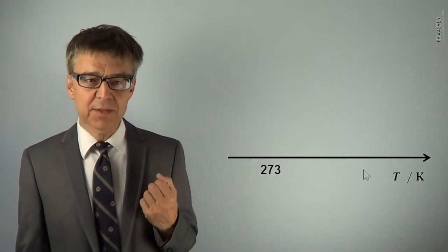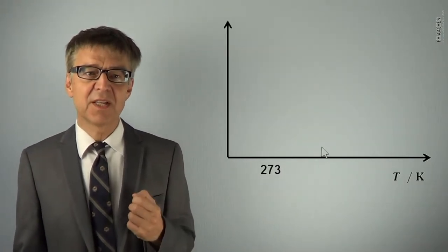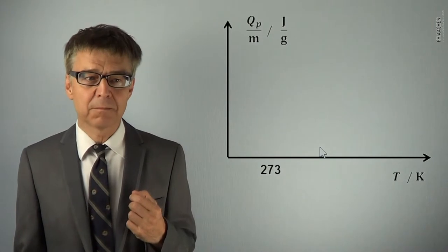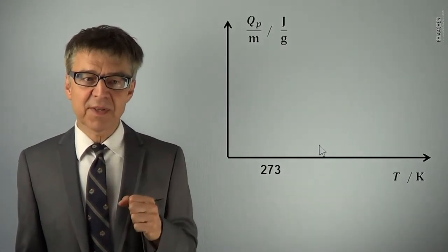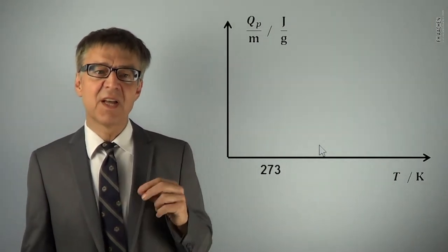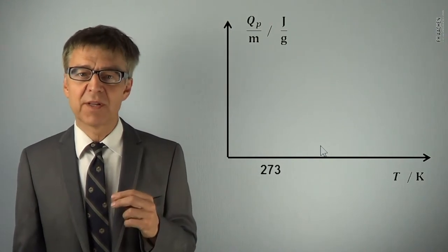On the ordinate, we plot the absorbed heat, or more precisely, the specific heat in Joules per gram. We start at 273K and 1 gram of solid ice.